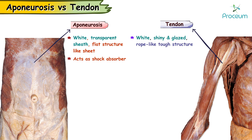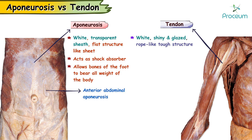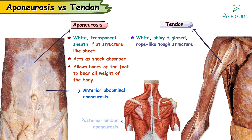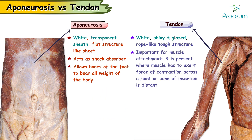Also, the epineurosis acts as a shock absorber, thereby allowing the bones of the foot to bear all the weight of the body without getting shorn. Certain examples of epineurosis are the anterior abdominal epineurosis, posterior lumbar epineurosis, etc. A tendon is extremely important for muscle attachments and is present wherever the muscle has to exert force of contraction across a joint or if the bone of insertion is distant.